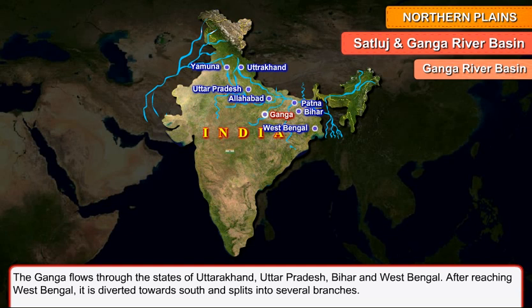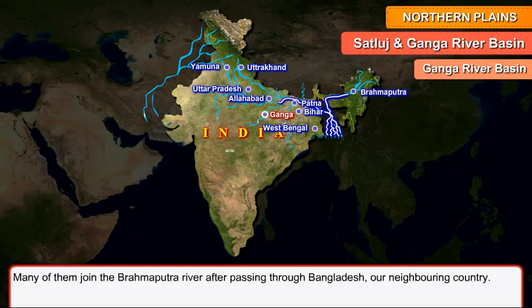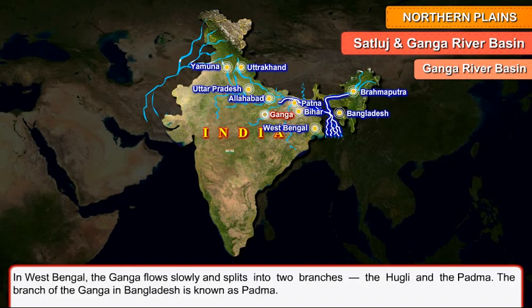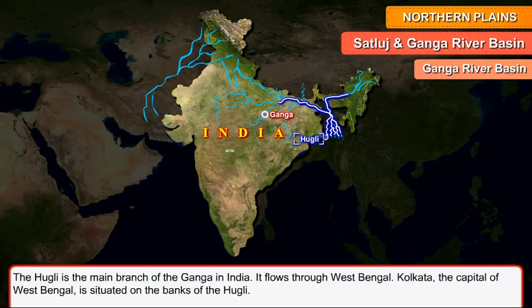After reaching West Bengal, the Ganga is diverted towards the south and splits into several branches. Many of them join the Brahmaputra River after passing through Bangladesh, our neighboring country. In West Bengal, the Ganga flows slowly and splits into two branches: the Hooghly and the Padma. The branch of the Ganga in Bangladesh is known as Padma. The Hooghly is the main branch of the Ganga in India, flowing through West Bengal. Kolkata, the capital of West Bengal, is situated on the banks of the Hooghly.